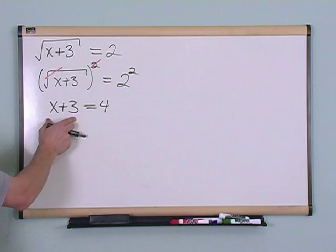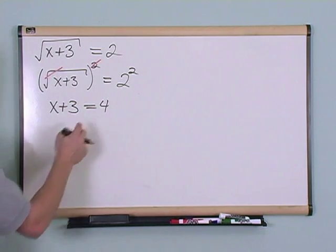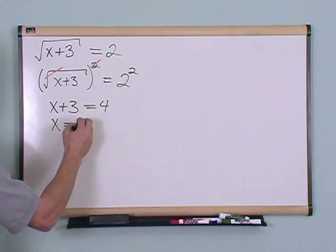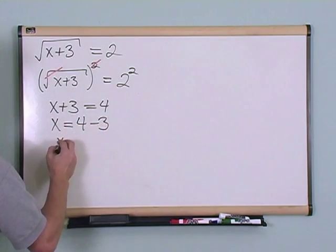And then in order to get x by itself, I just subtract 3 from both sides. And so then I've got 4 minus 3, so x is just equal to 1.